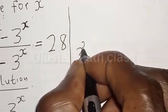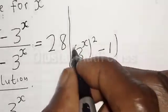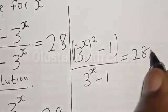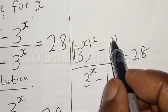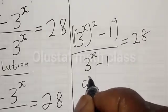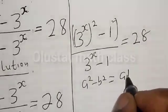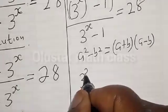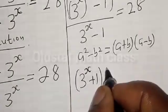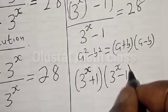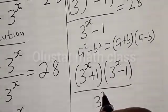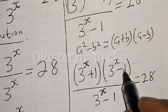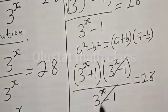This becomes 3 raised to power 2(s minus 1), divided by 3 raised to power s minus 1, is equal to 28. And 3 raised to power 2(s minus 1) minus 1 squared is a difference of two squares. If you have a squared minus b squared, that equals a plus b multiplied by a minus b. So the numerator becomes 3 raised to power s plus 1, multiplied by 3 raised to power s minus 1, divided by 3 raised to power s minus 1, is equal to 28. We cancel the common factor 3 raised to power s minus 1.